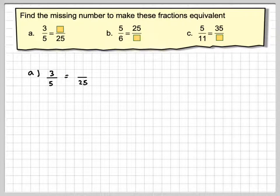So we've got 3/5 equals something over 25. What we need to do is figure out how to get from 5 to 25.